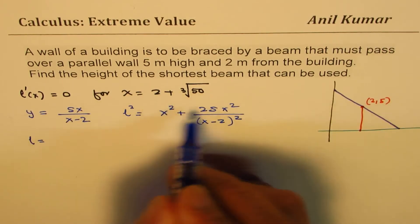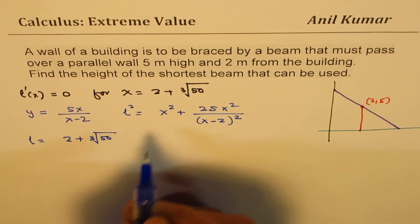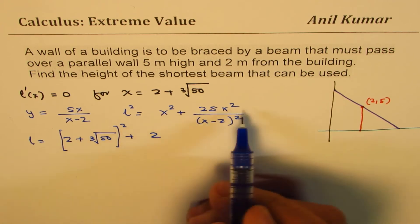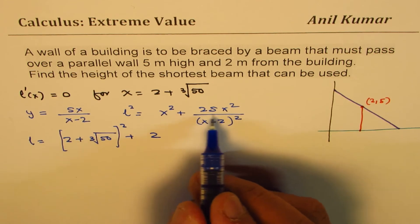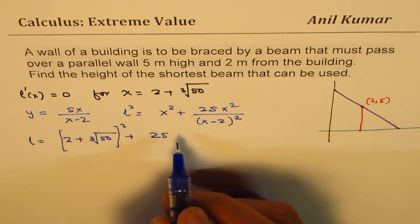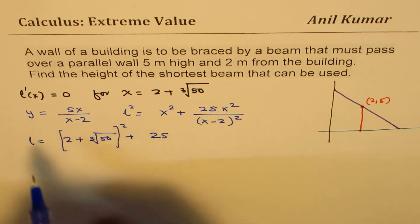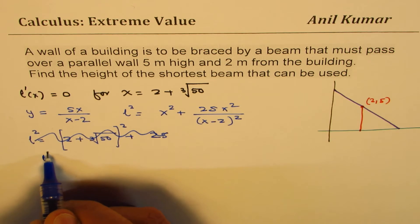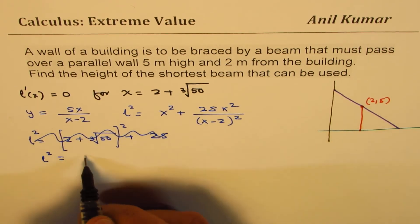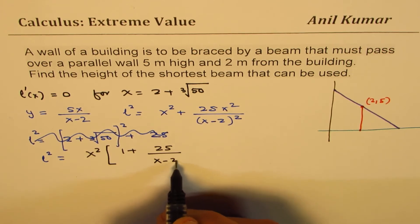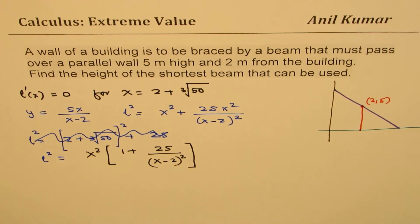L equals the square root of (2 plus ∛50)² plus 25 times (2 plus ∛50)² over (X minus 2)². Taking X² common, this becomes X² times (1 plus 25 over (X minus 2)²), and L is the square root of that expression.